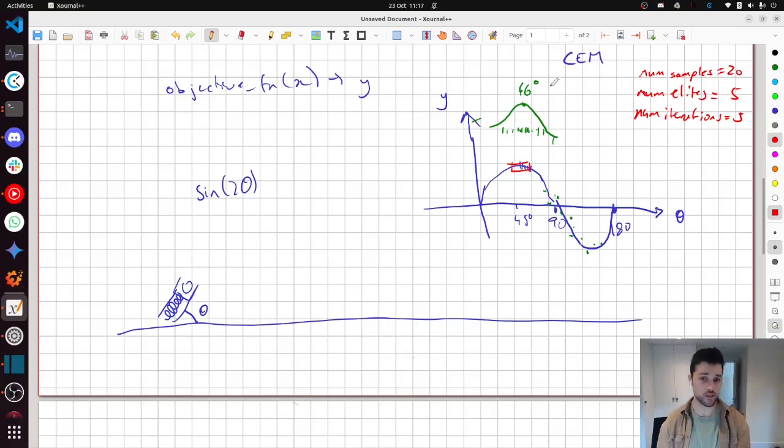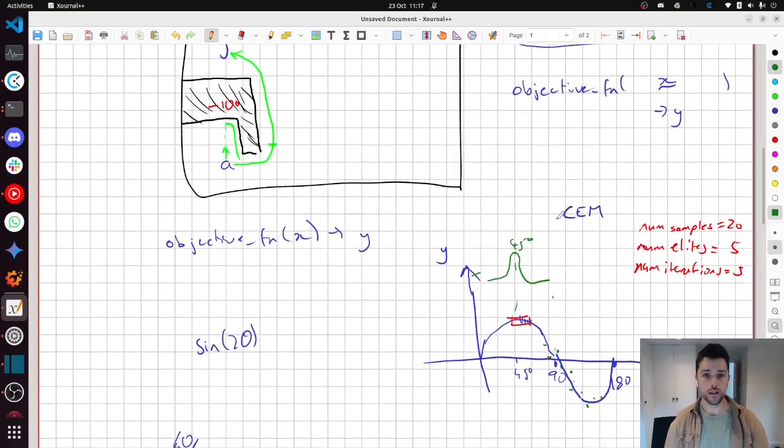So you run that for five iterations and probably in the end, what you get is 45 degrees with a tight standard deviation. You don't need to worry too much with the standard deviation now, because all you need to care about is the mean. That's your answer that you care about.